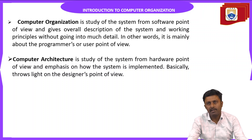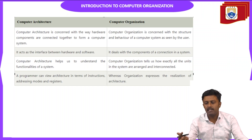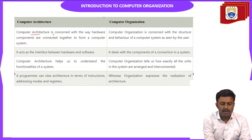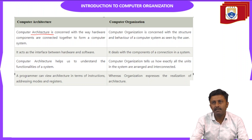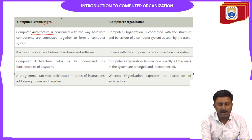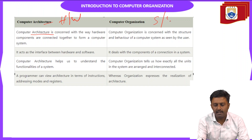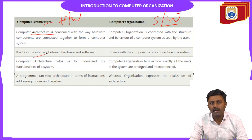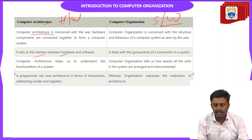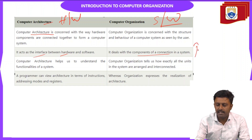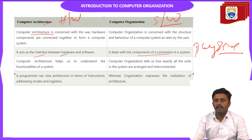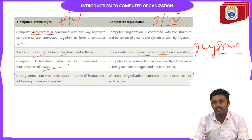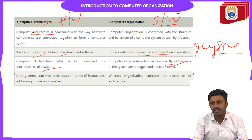In computer architecture, it is concerned with the way hardware components are connected together to form a computer system. In computer organization, it is a study of the software components of the computer. Computer architecture acts as an interface between hardware and software, while computer organization deals with the physical connections of the system's components.